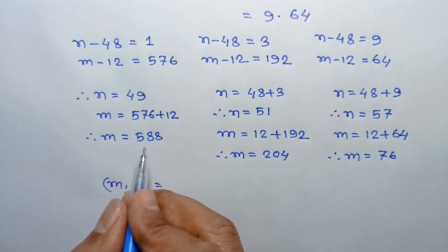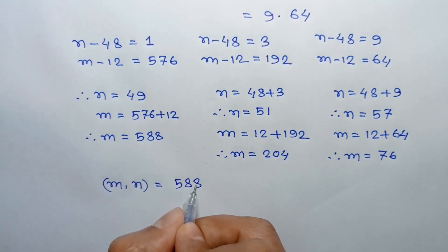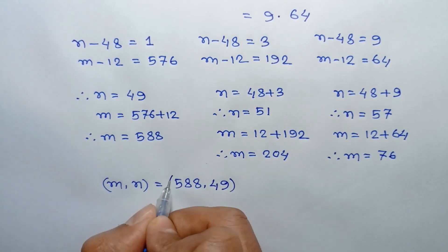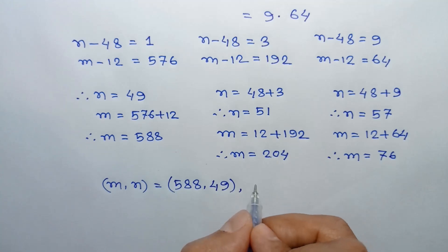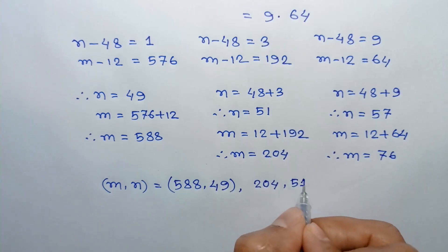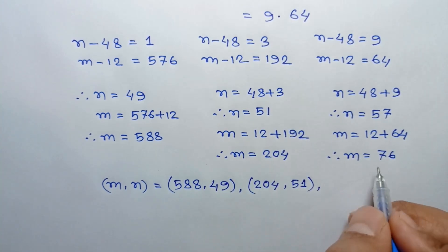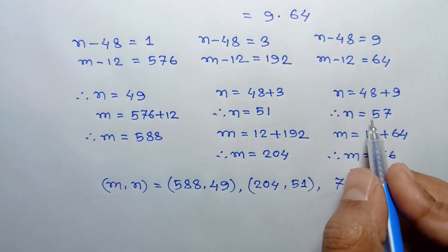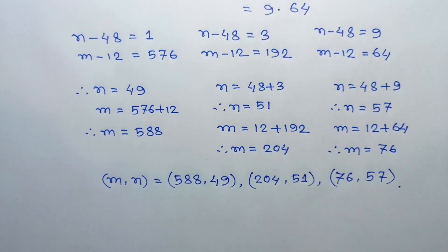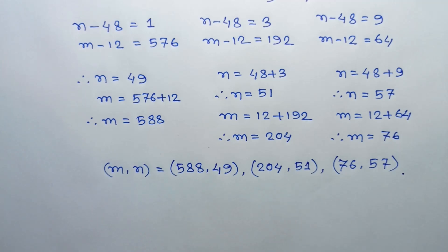So the three solutions of this equation are: m equals 588 and n equals 49; m equals 204 and n equals 51; and m equals 76 and n equals 57. If you like this video please subscribe to my channel. Thanks for watching.